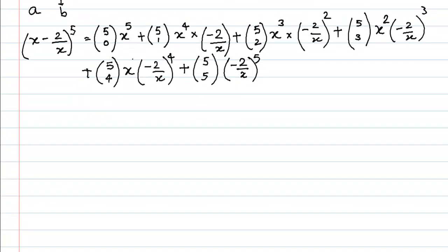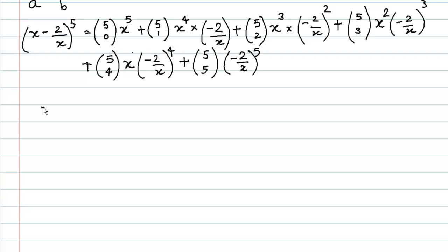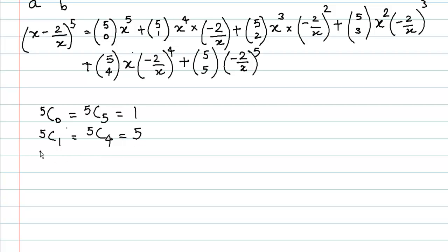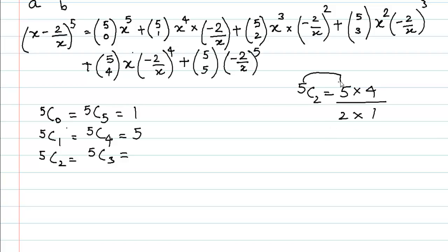Before we go further, let us calculate the combinations in advance. C(5,0) equals C(5,5) equals 1. C(5,1) equals C(5,4) equals 5. C(5,2) equals C(5,3), because 2 plus 3 is 5. C(5,2) equals 5×4 divided by 2×1, which equals 10. It is very important to prepare the combinations in advance so that the sum becomes simpler.